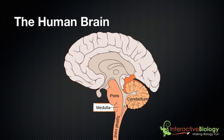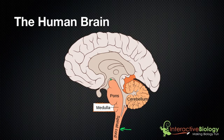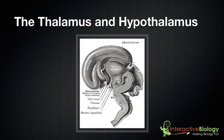Here we have the human brain. Before, we looked at this and saw that we have the spinal cord that enters the cranium, and as soon as it enters the cranium we have the brain. We spoke about the brain stem already, we spoke about the cerebellum, we spoke about the cerebrum. What we're going to talk about today is the hypothalamus and the thalamus. I'm going to take this area here and show it on a different picture so that we can look at a little more detail.